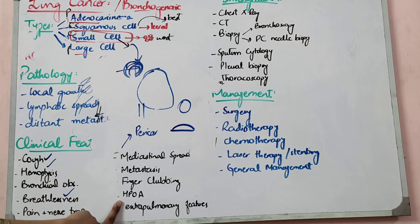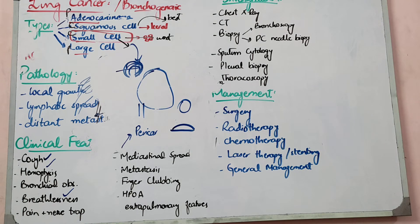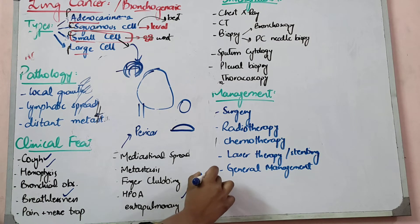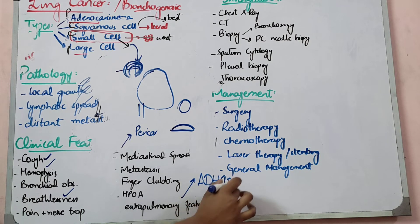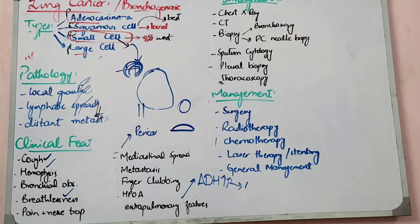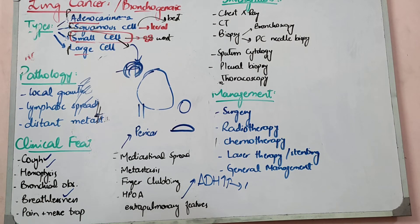Extra-pulmonary features are many. You have to remember the syndrome of inappropriate ADH secretion, which increases anti-diuretic hormone secretion from the pituitary, meaning water is conserved in the body and concentrated urine is excreted, which can cause kidney stones or infections. Ectopic ACTH secretion — adrenocorticotropic hormone from the pituitary — can also be enhanced. For the rest of the extra-pulmonary features, you should look at the Davidson table, as features like hypercalcemia and SIADH are all listed there.